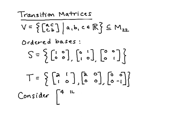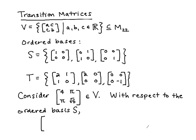So we're going to consider the vector 4, pi, pi, square root of 5, in V. I said vector because we're working in a vector space, but of course we recognize that this is a 2 by 2 matrix. With respect to the ordered basis S, we can find coordinates for this 2 by 2 matrix.